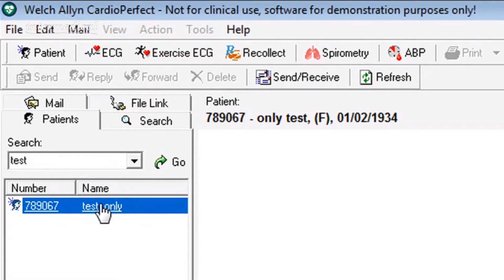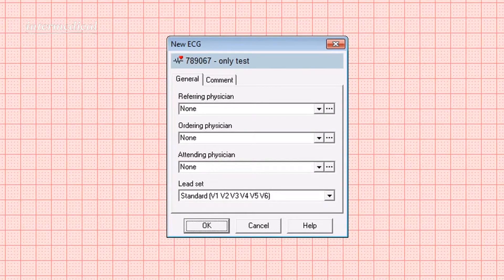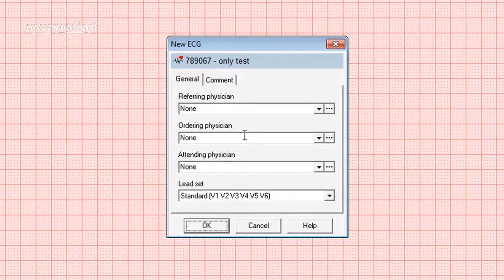Highlight the patient's name and click on the ECG icon. The software then loads the module. You get a box up on screen which says new ECG and confirms the number and the name of the patient, and all you need to do to take the ECG is to click OK.